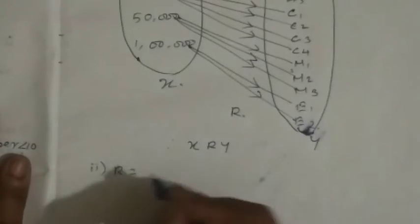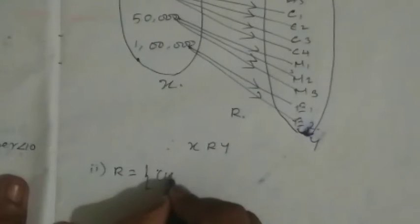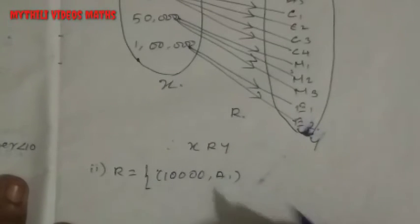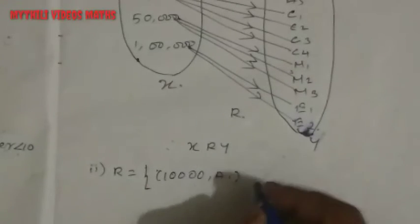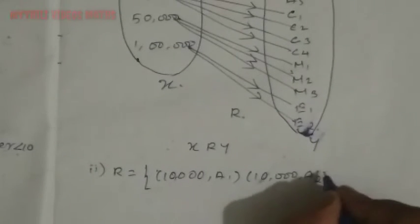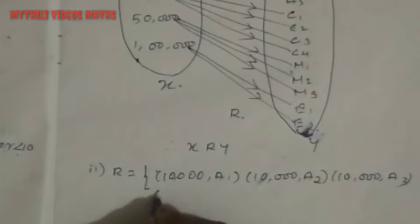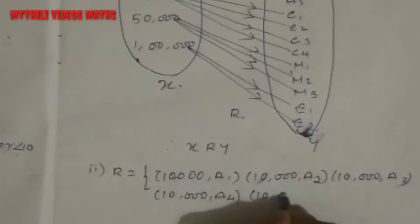Relation - I already told, write it carefully. So first, 10,000 comma A1. You have to write like this. Already relation is a set of ordered pairs. So 10,000 comma A1, and then 10,000 comma A2, and then 10,000 comma A3, and then 10,000 comma A4, then 10,000 comma A5.